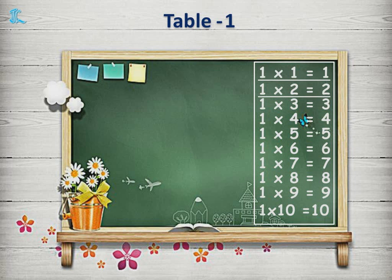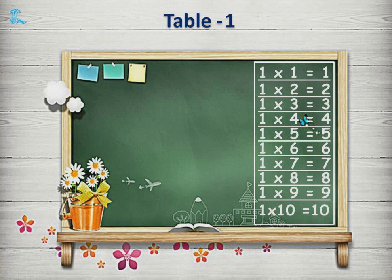1 1s are 1. 1 2s are 2. 1 3s are 3. 1 4s are 4. 1 5s are 5. 1 6s are 6. 1 7s are 7. 1 8s are 8. 1 9s are 9. 1 10s are 10.